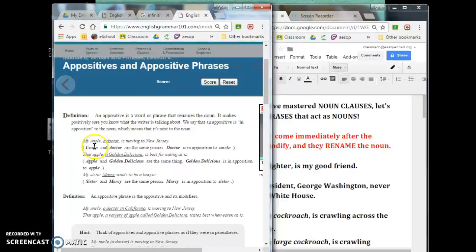So in this sentence my uncle a doctor is moving to New Jersey. Uncle is being renamed by doctor. So you could say my uncle is moving to New Jersey or you could say a doctor is moving to New Jersey. And the sentence will work either way. So doctor is the appositive. That's just an appositive by itself.